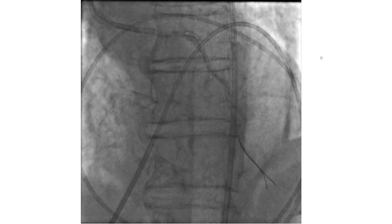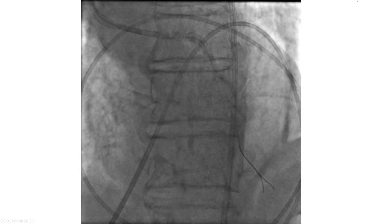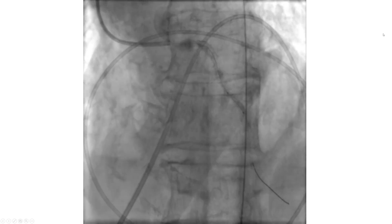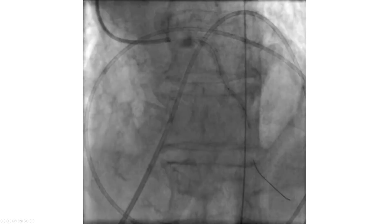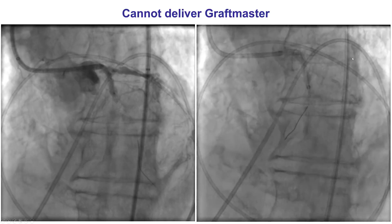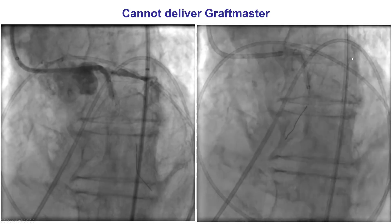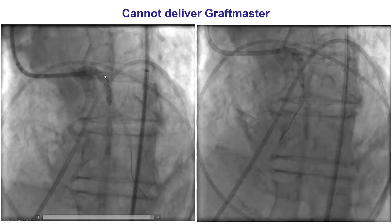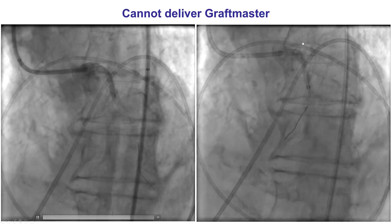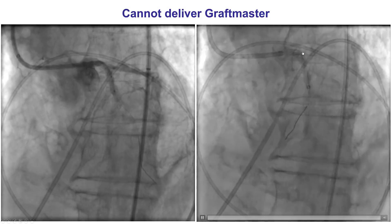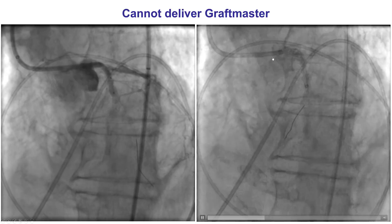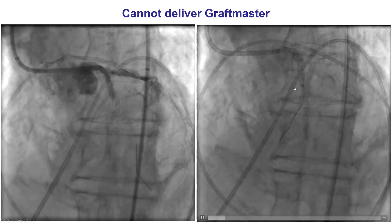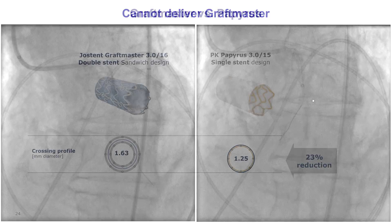Treatment for a large vessel perforation is a covered stent. The challenge here was a major diagonal branch that we couldn't wire despite multiple attempts. Eventually we advanced a guidewire into the diagonal branch; however, despite balloon inflations we were not able to deliver a GraftMaster. There was severe calcification. We transiently lost and then regained wire position in the LAD. We switched from radial to femoral, using an 8 French guide and 8 French GuideLiner, but despite this setup we still could not deliver the covered stent all the way to the perforation site.